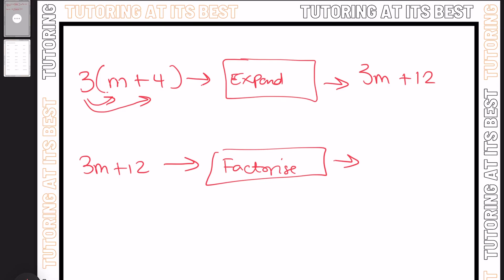And how is that done? Well, we have to get back to the position of having 3m plus 12. To factorize, we need to look for a number which is a factor of both 3 and 12 — that is why it is called factorizing. We know that 3 is a factor of both 3 and 12, so 3 will go in front of the bracket. We then divide 3m by 3, so the 3 and the m split up, and we divide 12 by 3, giving us plus 4.